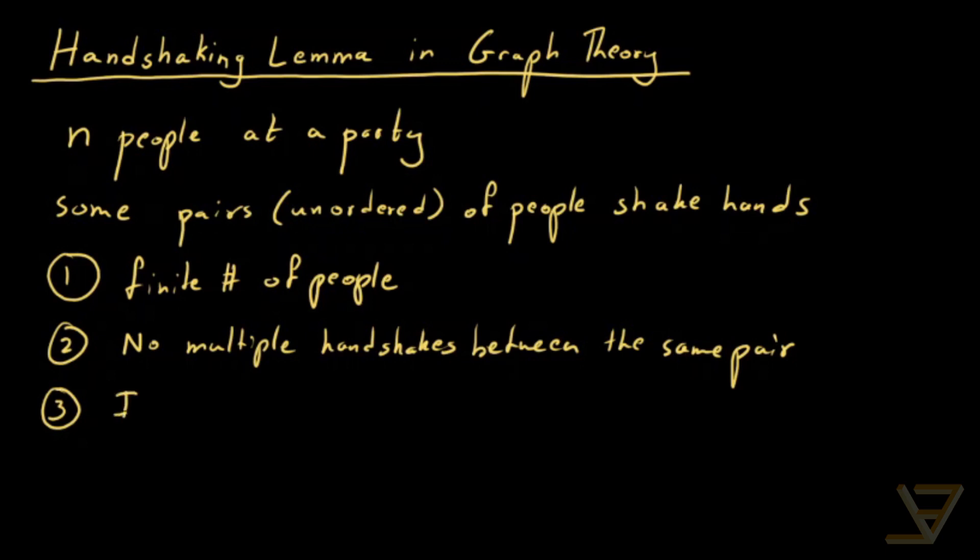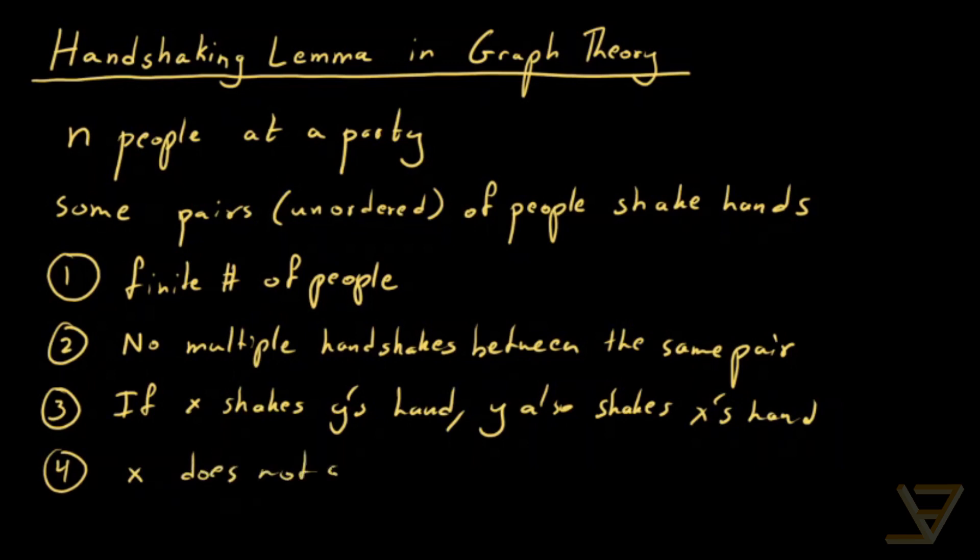The third condition is that if X shakes Y's hand, Y also shakes X's hand. So it's reciprocal. It's not like X can shake Y's hand without Y shaking X's hand. And finally, X does not shake X's hand. So there's no person who shakes his or her own hand.